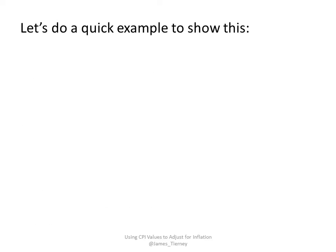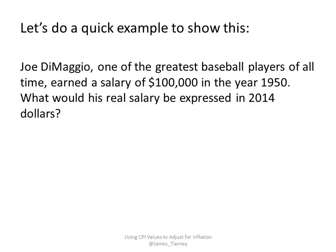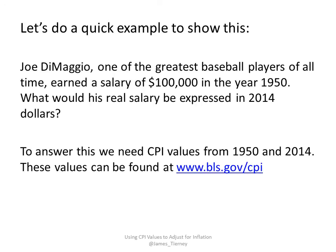Let's do a quick example to show this. Joe DiMaggio, one of the greatest baseball players of all time, earned a salary of $100,000 in the year 1950. What would his real salary be expressed in 2014 dollars? To answer this, we need CPI values from 1950 and 2014. These values can be found at bls.gov/CPI.